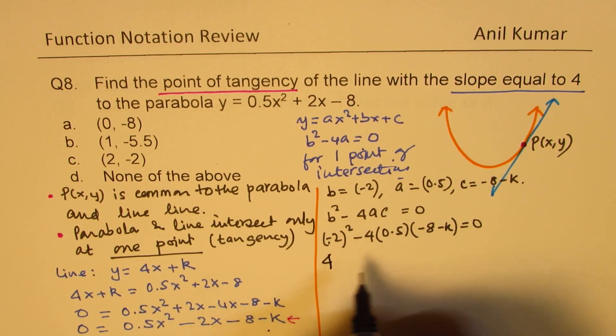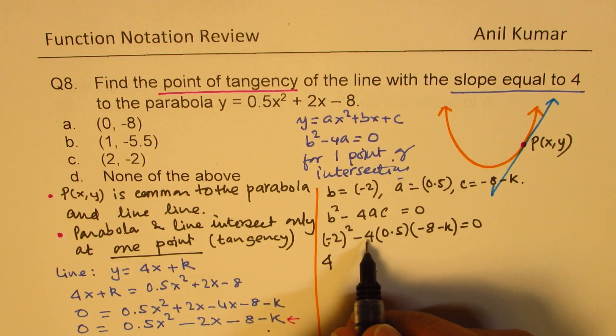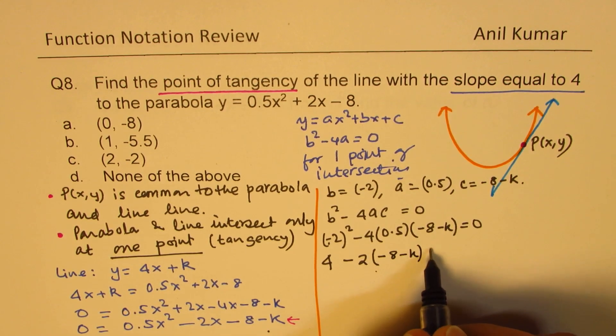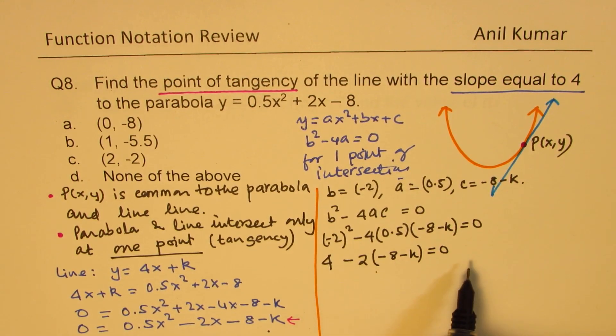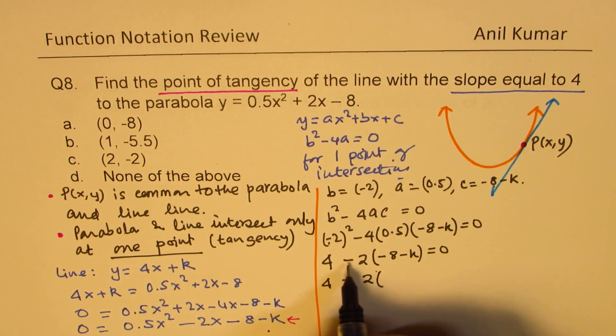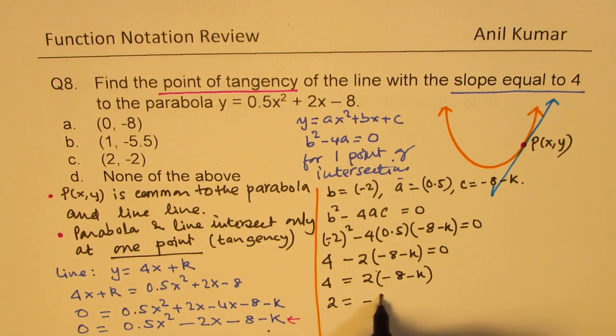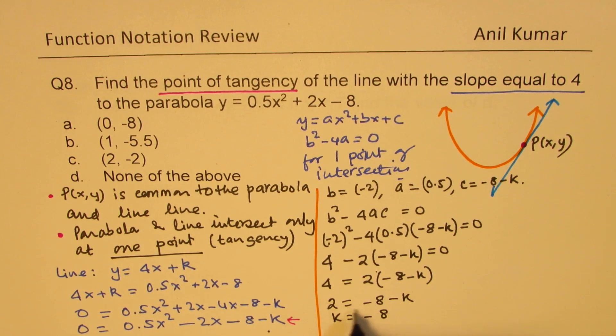Now, (-2)² is 4, and 4 times half is 2. So we could write this as 4 - 2(-8 - k) = 0. We can now solve for the value of k. So we have 4 = -2(-8 - k). Dividing by 2, we get 2 = -(-8 - k), so 2 = 8 + k, and k = -10. So the value of k is -10.